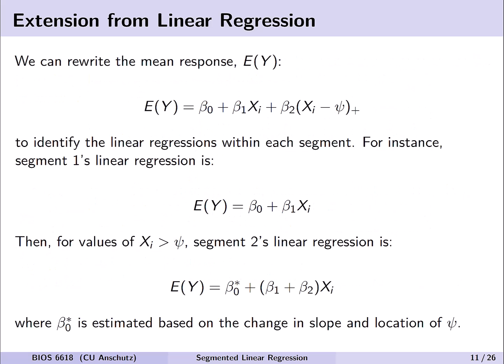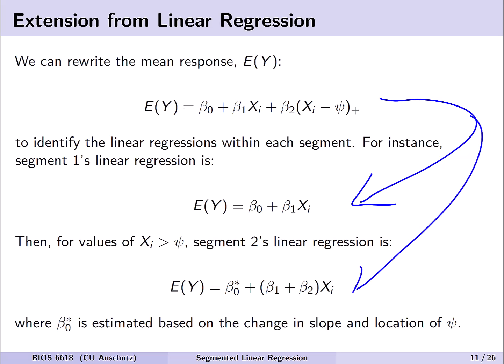We can rewrite this as the expectation of y, removing the epsilon term, and further express it in terms of the first and second segment regression models. The first segment is simply a linear regression: E(y) = beta naught plus beta 1 times x_i. If x_i is greater than the breakpoint psi, the segment 2 regression model uses beta naught star — the intercept accounting for the second segment slope and breakpoint location — and the slope for x_i is beta 1 plus beta 2.